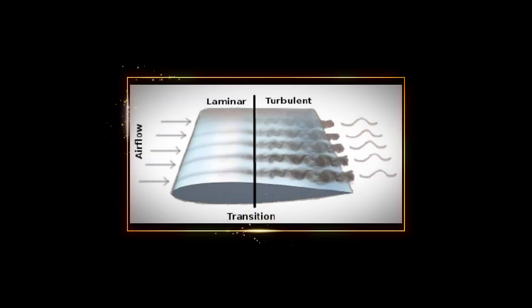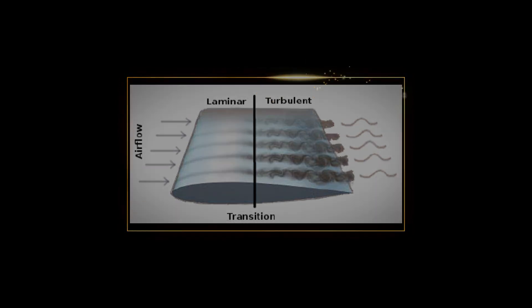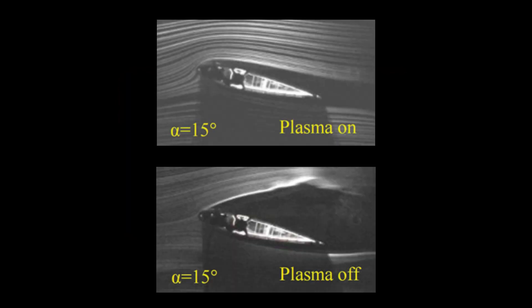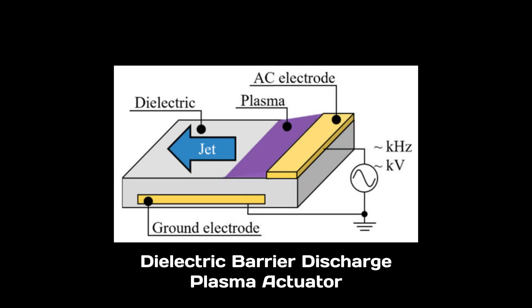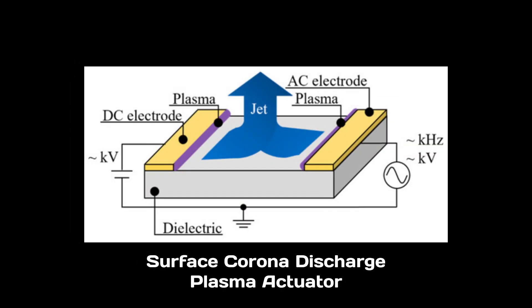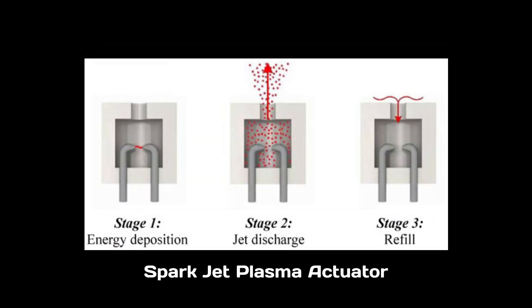A plasma actuator can delay laminar-to-turbulence transition. It can also delay or eliminate flow separation and thus improve aerodynamic performance of aircraft. There are different kinds of plasma actuators such as a dielectric barrier discharge plasma actuator, a surface corona discharge plasma actuator, and a sparkjet plasma actuator.